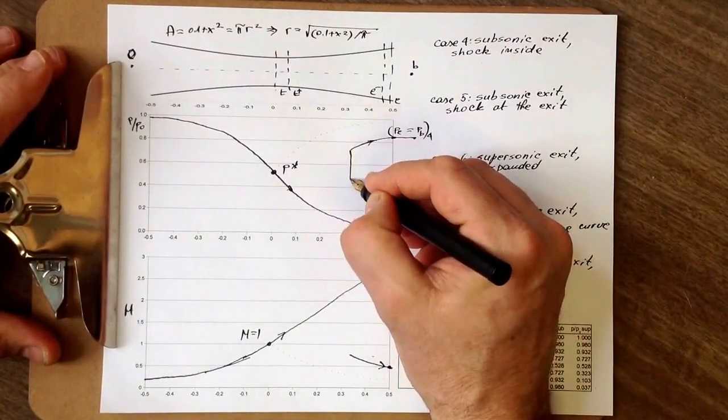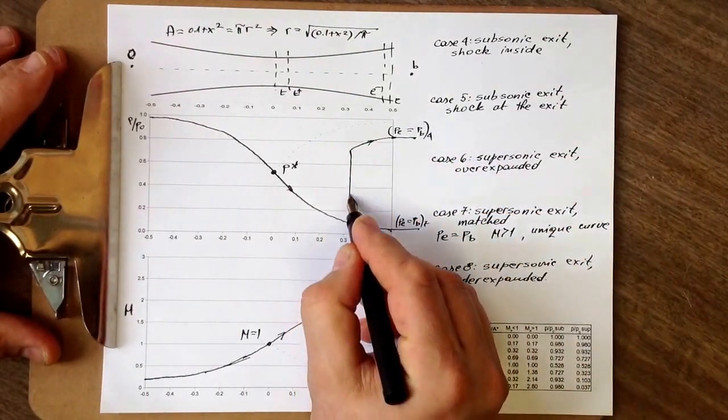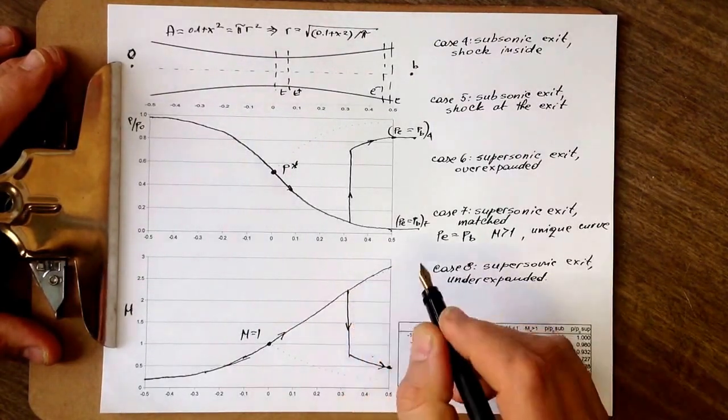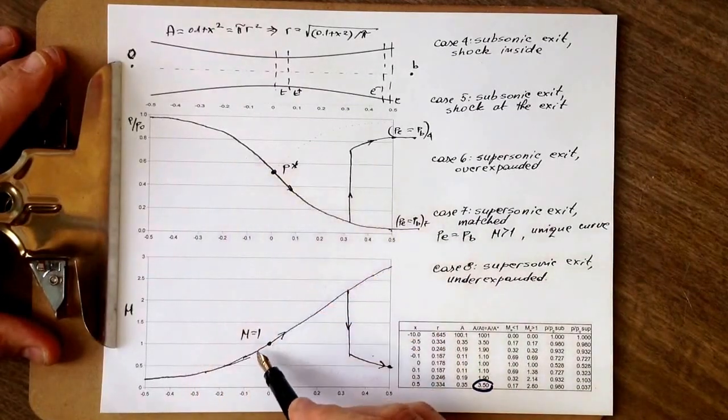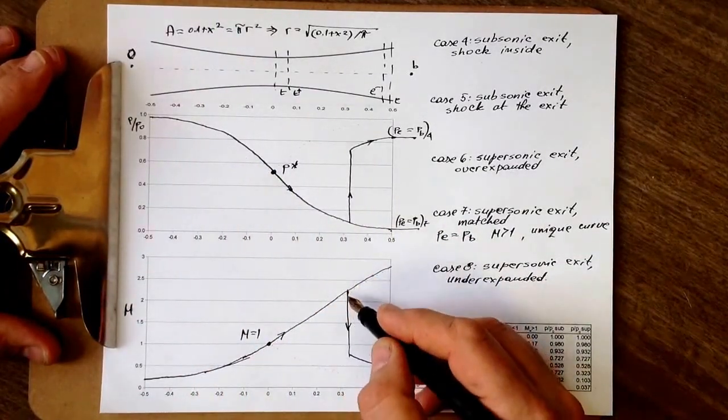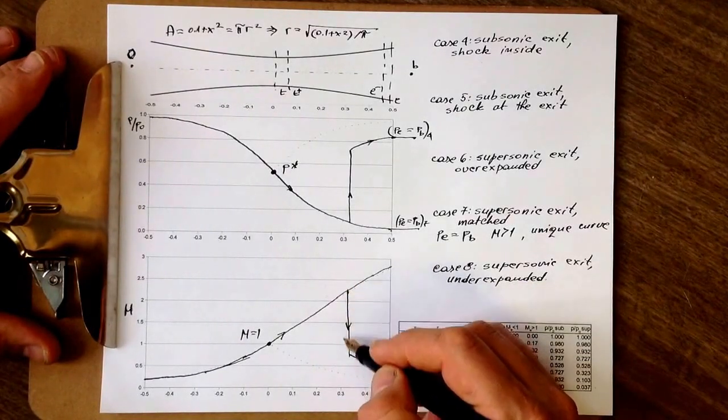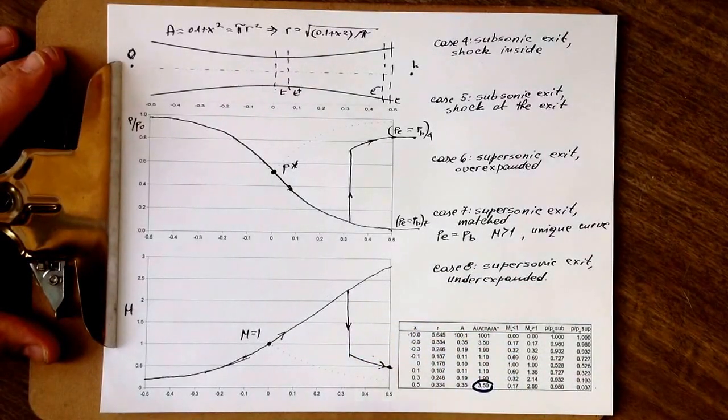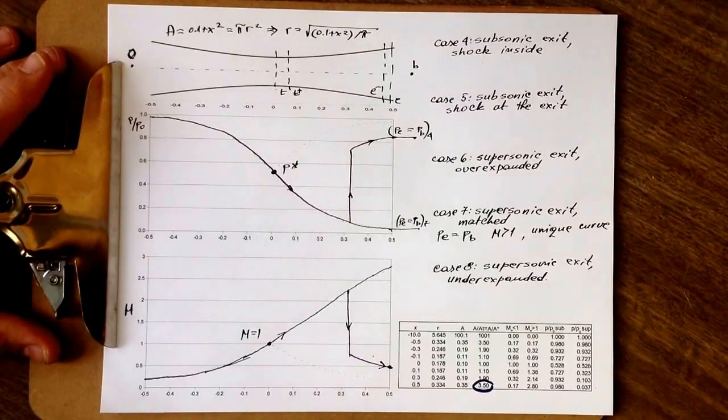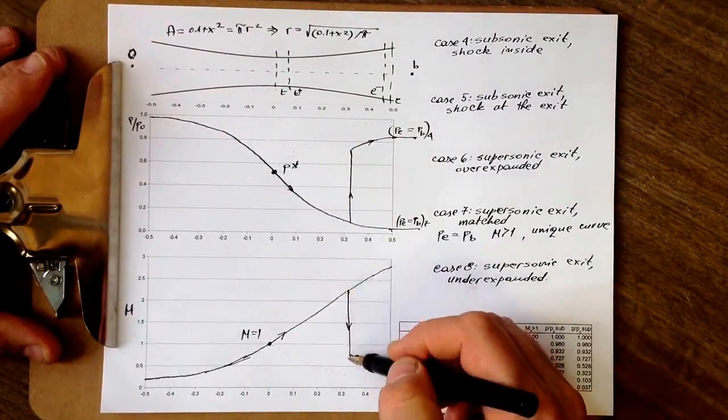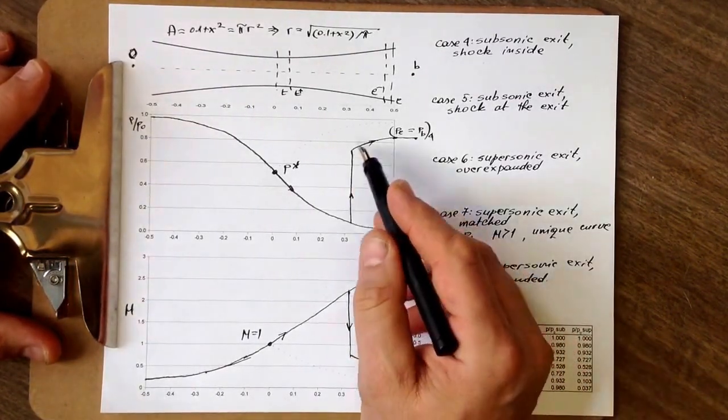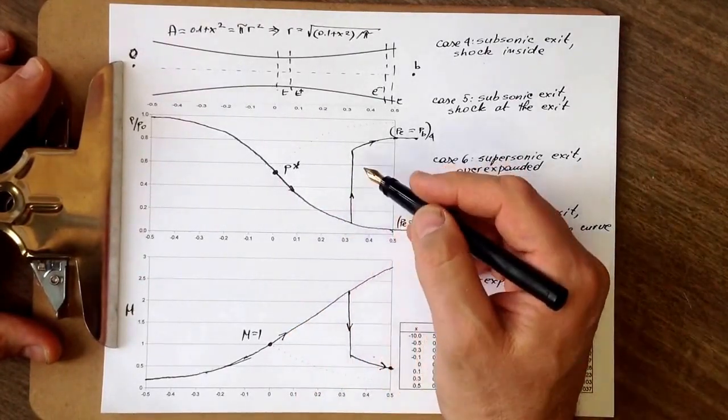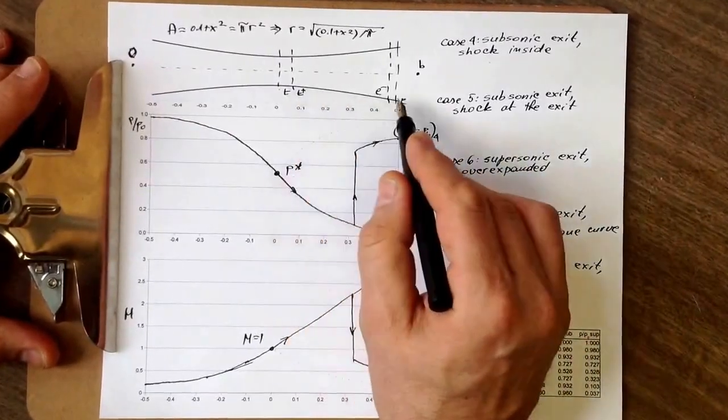Well, the only way is if we have the shock wave somewhere in the nozzle. Then the Mach number will increase to a certain value, and then at that point, we will have a jump to a subsonic value, and then a reduction to the exit condition. How do we know how big the jump there is? Well, it's a tricky thing to do, when all we know for now is that shock is somewhere inside the nozzle, in this region.